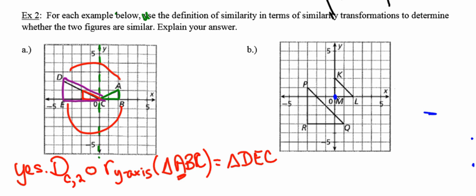I'm going to start with point M and find a transformation that will map it onto point R. I'll translate three units to the left and three units down — negative three units in the x direction and negative three units in the y direction. That will map point M onto point R. Three units to the left and three units down will also bring point K and point L to new positions — I'll call those K prime and L prime. So that translation maps triangle KML onto the small blue triangle.